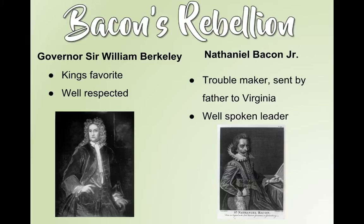Then you've got this guy Nathaniel Bacon Jr., who also lives in Jamestown. He's more of a troublemaker and is sent to Virginia by his dad, who hopes he'll grow into a man. He is very well-spoken, and originally he and Berkeley are kind of buddies and get along pretty well. Bacon is just a well-spoken leader — what a surprise, his name's Bacon.